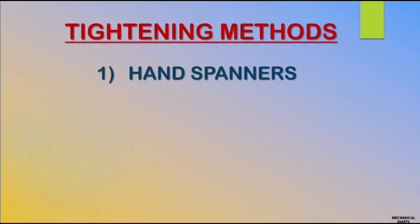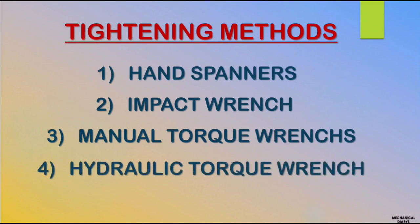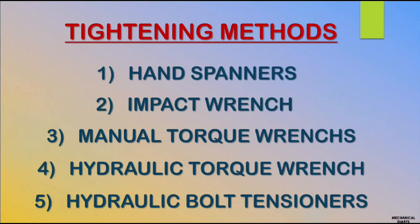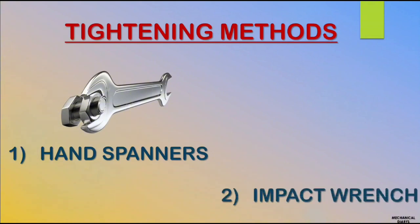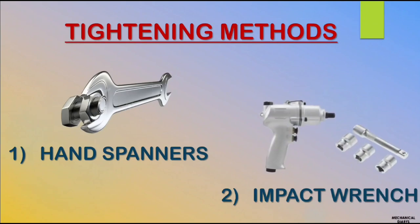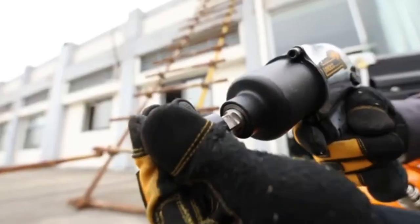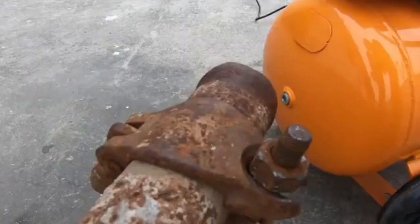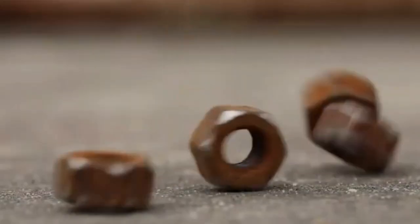Next is the method of tightening. There are 5 types of tightening methods in refinery. First is hand spanner by manual tightening. Second is impact wrench — it works pneumatically and comes in different drive sizes like half inch, three-quarter inch, and one inch. You choose the correct size of socket and drive. Impact wrench is a good tool for tightening many bolts in one flange, like fin fan plugs and surface condenser covers.